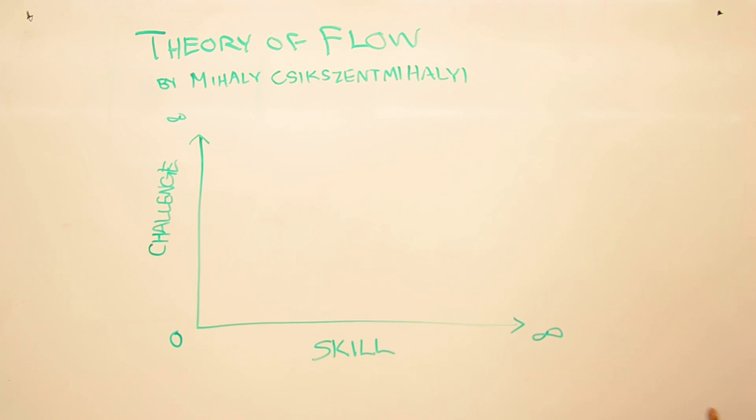There's an author who wrote a book called Flow, and he had this theory of flow. I don't know how to pronounce the guy's name, so it's right here. But he's Italian, and he came up with this chart to relate the challenge of an activity to the skill you have.